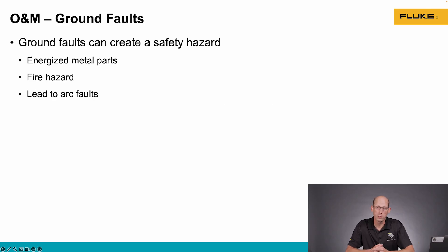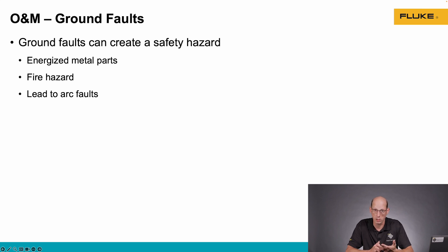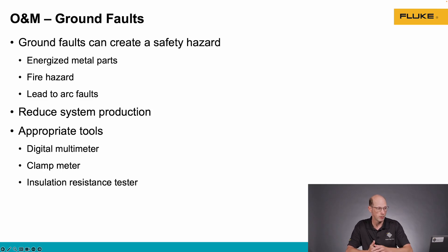Ground faults can be a safety hazard. If current's flowing to ground, it may be arcing, and that arcing can cause sparks which can cause fires. That's a safety hazard to the technician because the non-current carrying metal parts have now become energized. If the technician touches the frame of a module, they may become an easier path to ground and that's where shocks or electrocution happens. Ground faults also reduce system production because current is flowing to the ground instead of going to the load — the inverter.